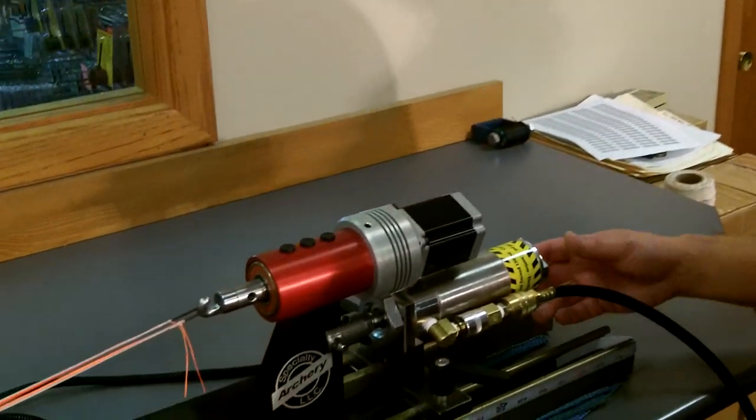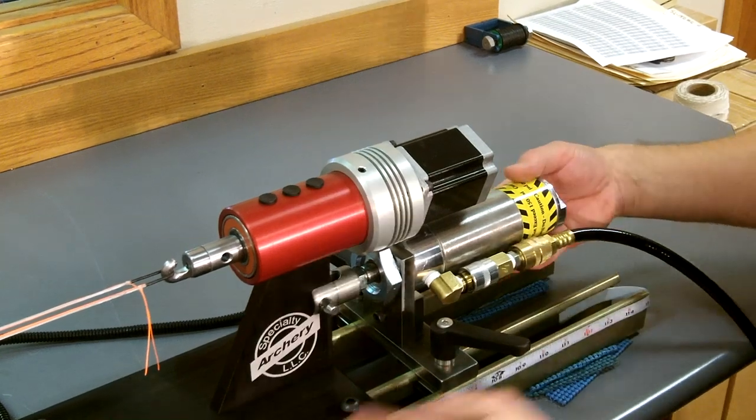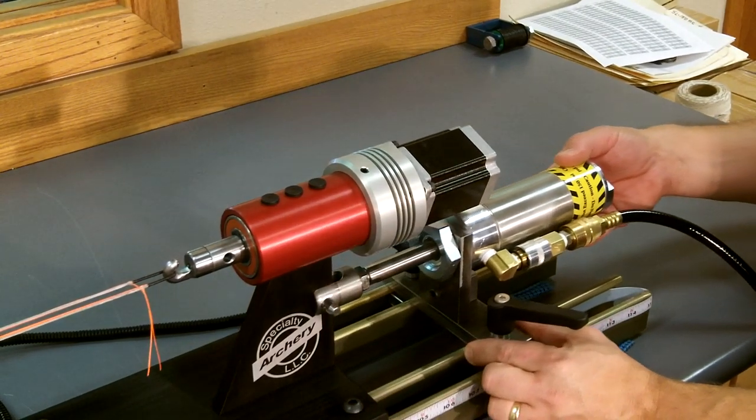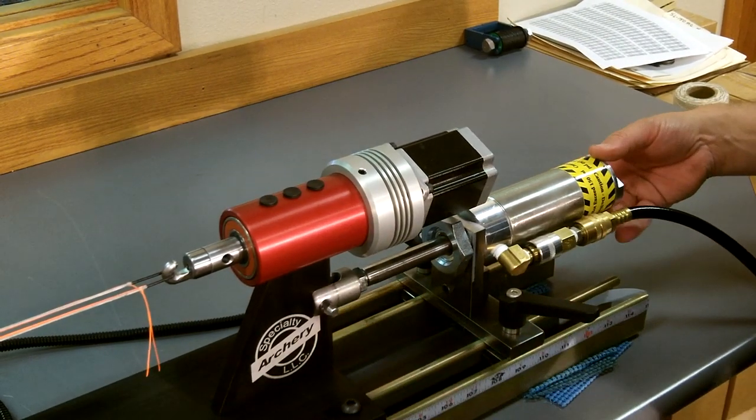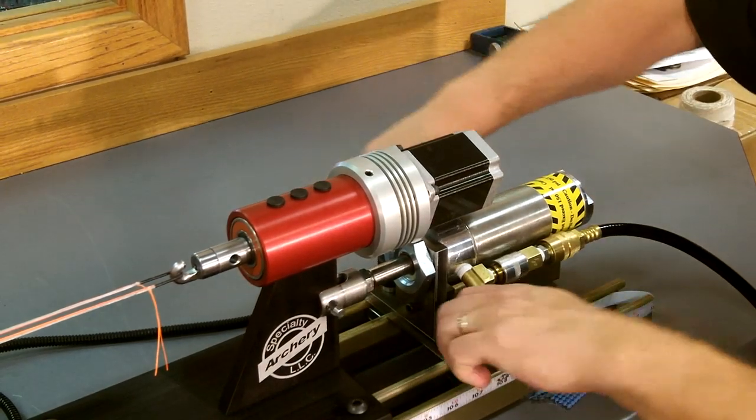Now we're going to show you how to tension the string. We have a string laid up ready to be twisted. We're going to slide our movable motor assembly to slightly tension the string. Our movable tensioning unit has three inches of travel, so we're going to set that halfway on the shaft and tighten down our hand toggles.